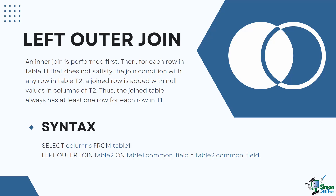In the case of the left outer join, an inner join is performed first. Then, for each row in table T1 that does not satisfy the join condition with any row in table T2, a joined row is added with null values in the columns of T2. Thus, the joined table always has at least one row for each row in T1. As we can observe from the Venn diagram, all records from the left table will be included in the output regardless of whether they have a matching record or not. The syntax is: SELECT columns FROM table1 LEFT OUTER JOIN table2 ON table1.common_field = table2.common_field;